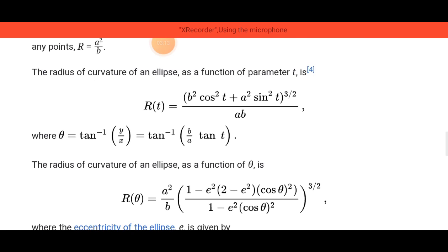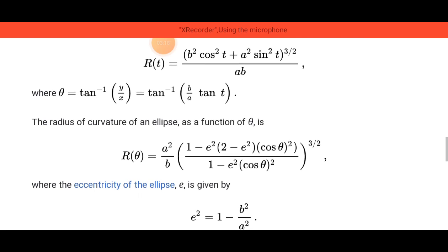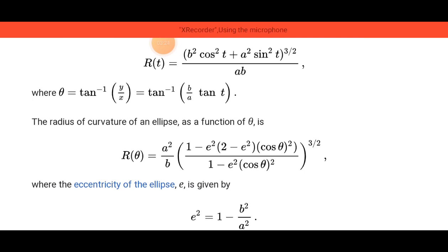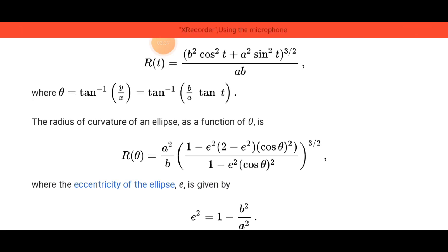The radius of curvature of an ellipse as a function of theta is R(theta) equal to a squared over b, times 1 minus e squared times 2 minus e squared times cos squared theta, all over 1 minus e squared cos squared theta, raised to the 3/2 power.